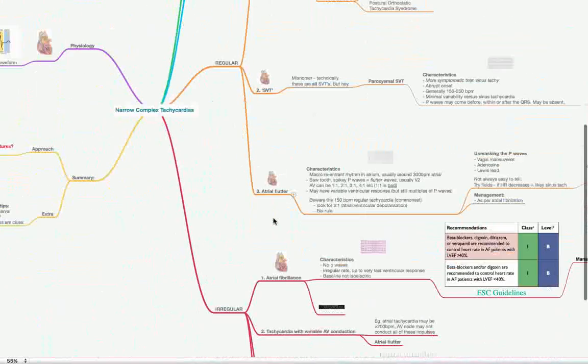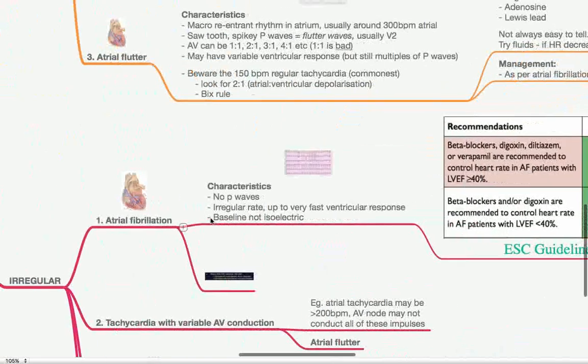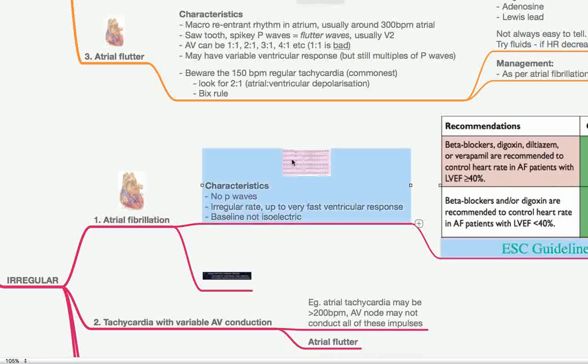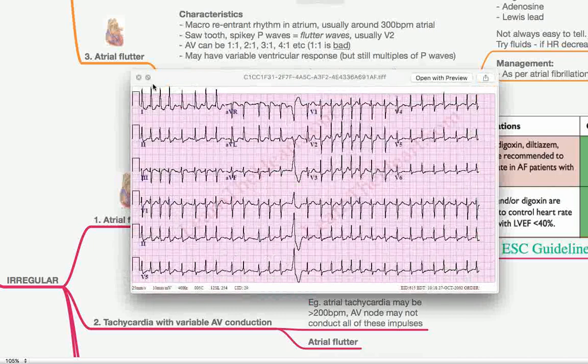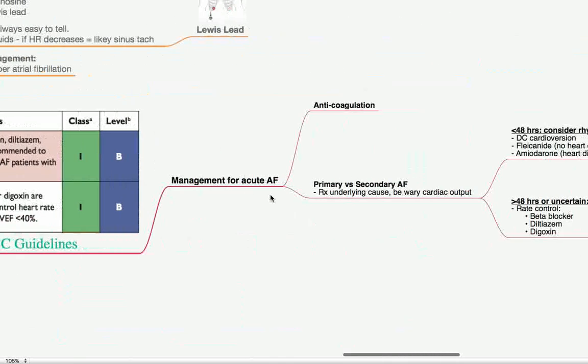So we've covered our regular narrow complex tachycardias. Let's move on to our irregular narrow complex tachycardias. AF is a very familiar friend for all of us. No P waves because the atria are just firing off at such an irregular chaotic rate. The rate is also very irregular because of that chaotic nature. And the ventricular response can be extremely variable. If someone's got high sympathetic tone, if they've got thyrotoxicosis, it could be very fast ventricular rates. If they've got beta blockers on board or parasympathetic tone is increased, then it could be a lower ventricular rate. And this is a fast AF. And you can see, we don't really have any P waves. It's irregular. It's narrow complex. Hey-ho, it is atrial fibrillation.